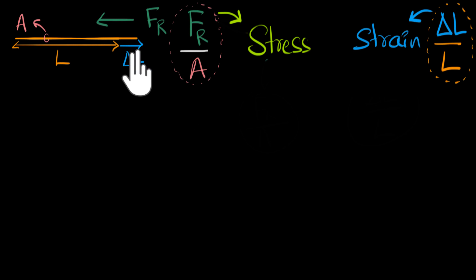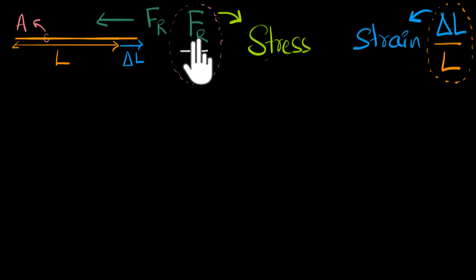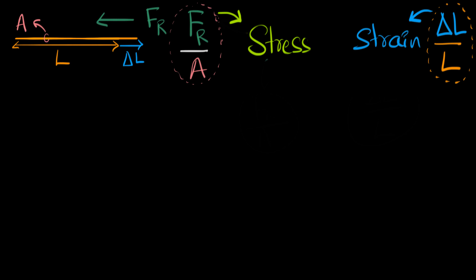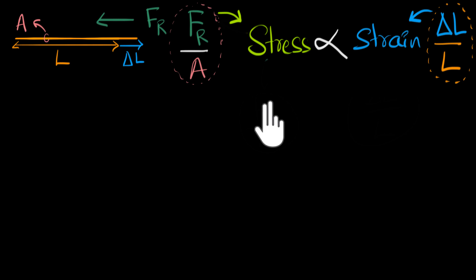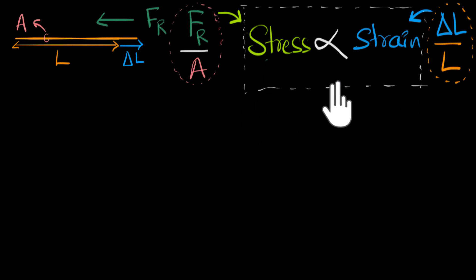One thing we could intuitively say is that if you were to increase the strain — that means increase the amount of deformation you produce — then the stress in the material would also increase. If you deform it more, the material will try to snap back even more. So more strain should produce more stress. And experiment supports that. In fact, experiment tells us that for small strain values, stress is even proportional to strain. If you double the value of strain, stress will just get doubled — linear proportionality. This law, which says stress is proportional to strain, is called Hooke's law.